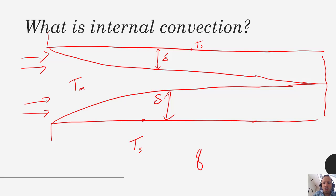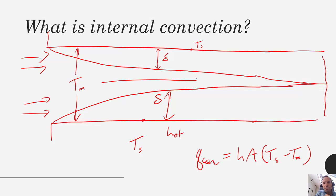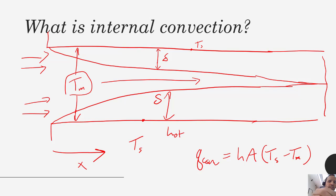When we talk about internal convection, Q_convection is not going to be H times A times (T_surface minus T_infinity). Rather, because we're not dealing with a bulk infinite fluid, we use the mean temperature. The mean temperature is averaged radially — perpendicular to the x-axis — and it can actually increase in the x-direction axially as the flow is heated.